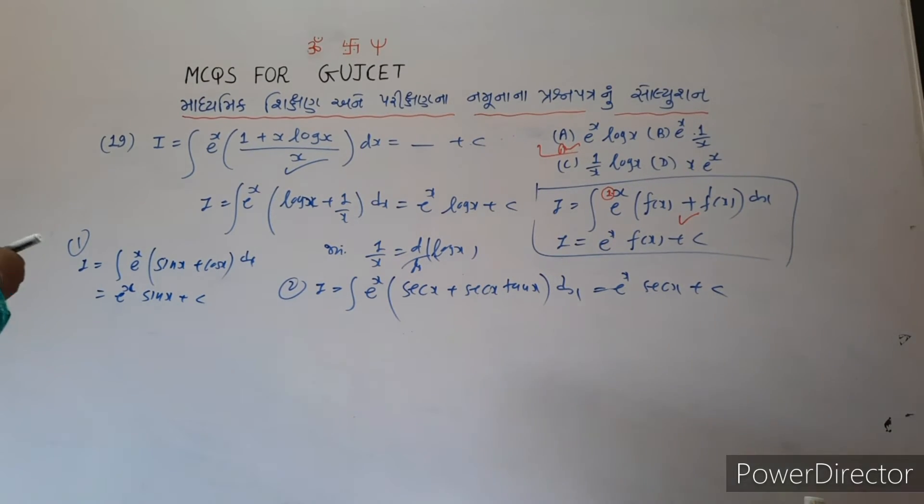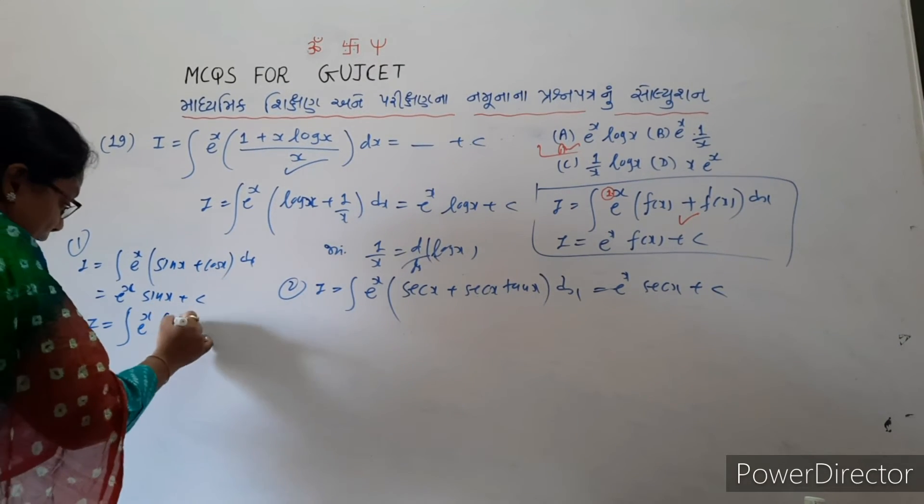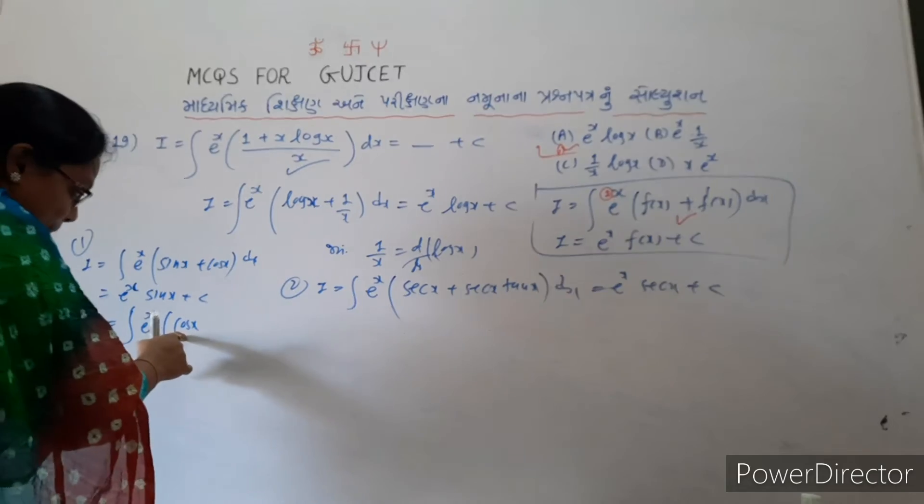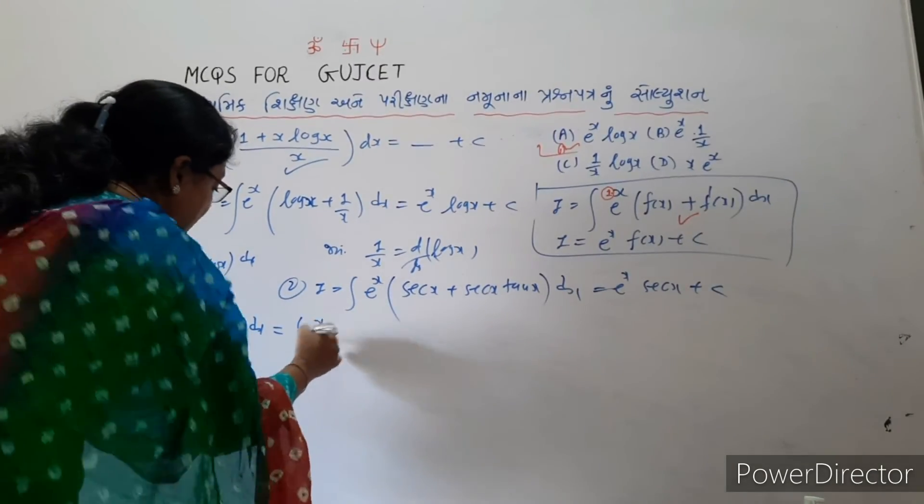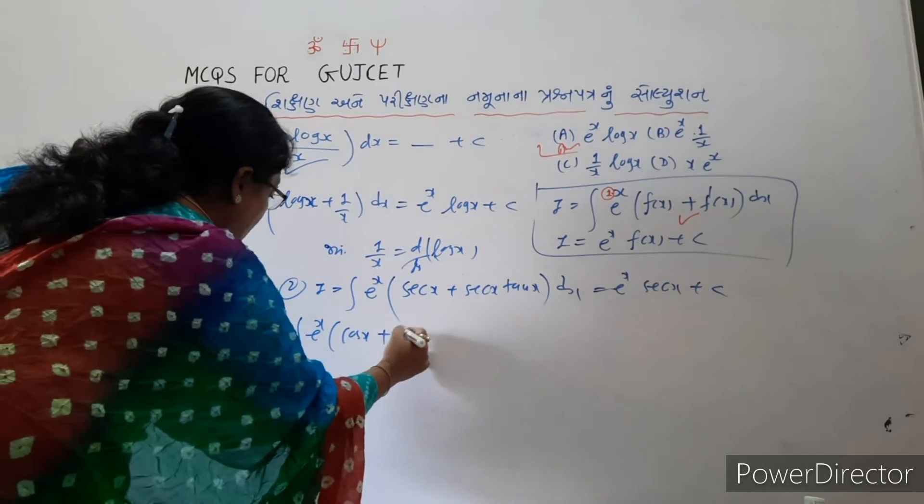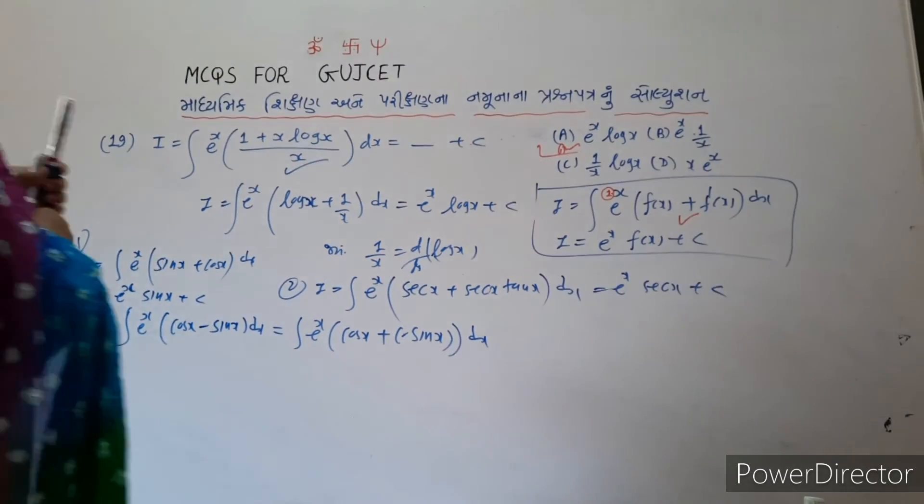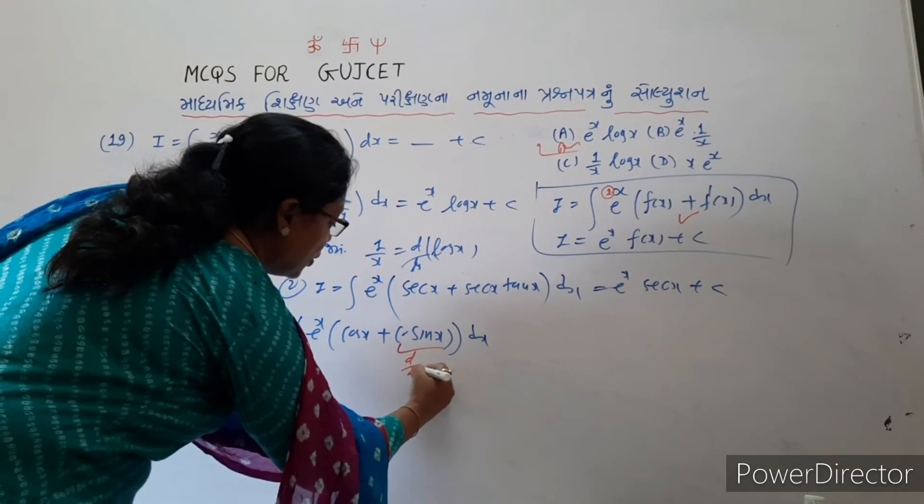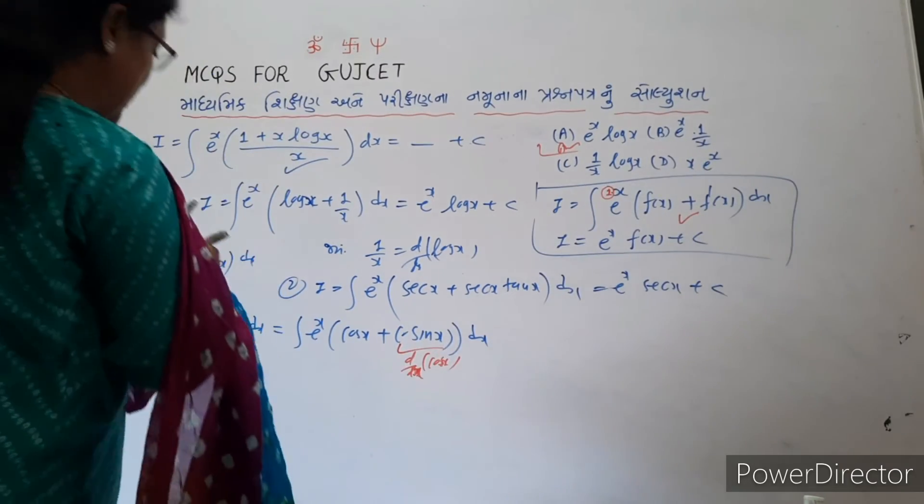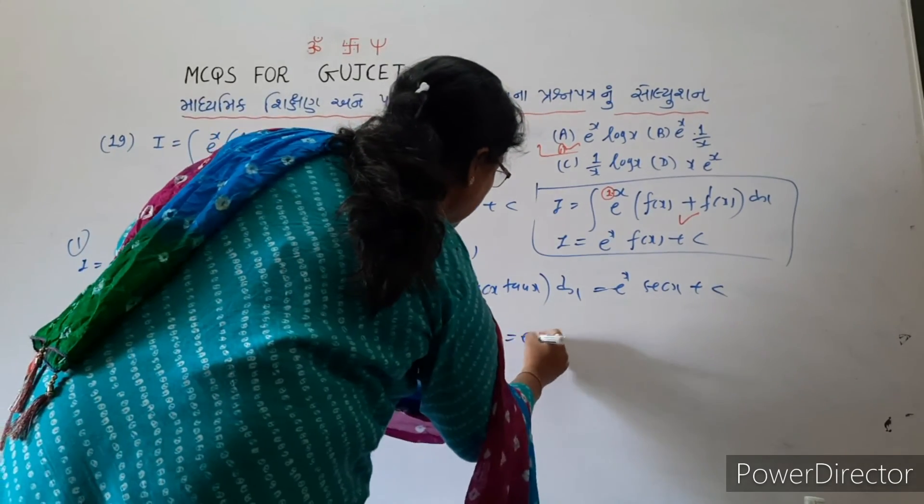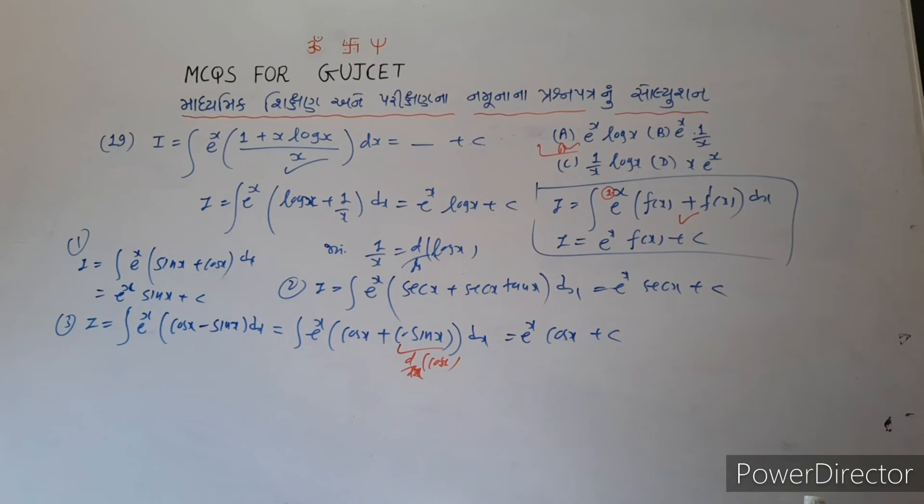The answer is e raise to x f of x plus c. So I is equal to integration e raise to x, cos x minus sin x dx. So I am going to form e raise to x cos x plus minus sin bracket dx. d by dx of cos x is minus sin x. So the answer is e raise to x cos x plus c.